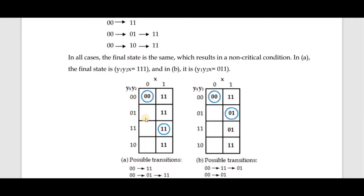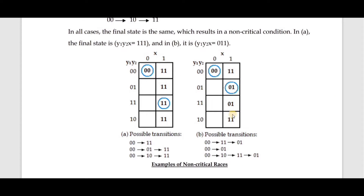So the path goes from 00 to 01 and then to 11. Next, if y1 is changing, it goes to 10. With x also changing, it goes to 11, which is an unstable state. From 11 it goes to the stable state 11. So the possible transitions are: 00 to 10 and then to 11.